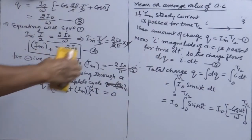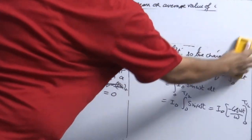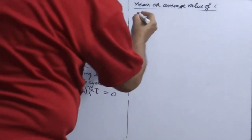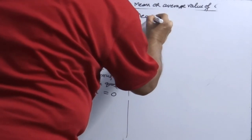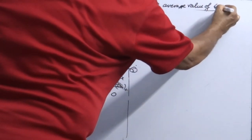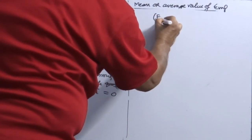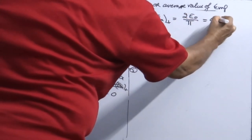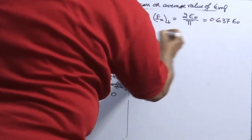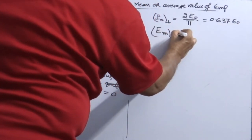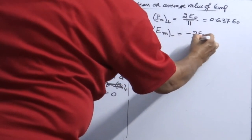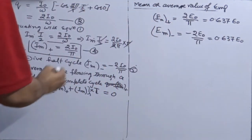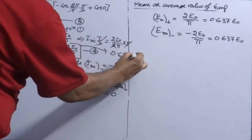Similarly, you can write for the mean value of AC EMF in the same manner: Em(positive) = 2E₀/π = 0.637 E₀, and Em(negative) = −2E₀/π, which is again 0.637 E₀ in magnitude. So the result is identical — this value is also 0.637 E₀.